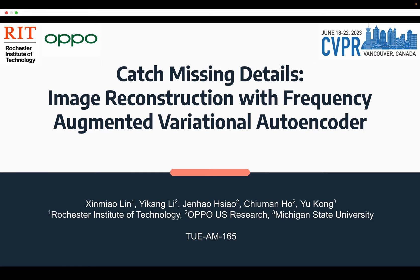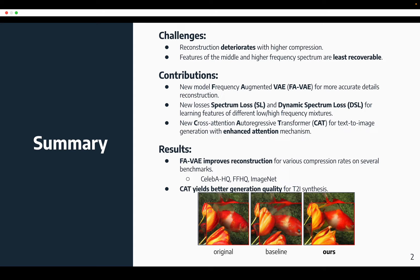Hello everyone. Welcome to our presentation on Catch-Missing Details: Image Reconstruction with Frequency Augmented Variational Autoencoder. The biggest challenge of image reconstruction models using VQVAE architecture is that the quality deteriorates quickly with a higher compression rate. We noted in the paper the main reason is that the features on the middle and higher frequency spectrum tend to be neglected.